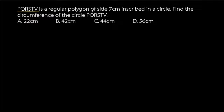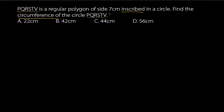PQRSTV is a regular polygon of side 7 cm inscribed in a circle. We are told to find the circumference of the circle. From the problem statement, PQRSTV is a regular polygon inscribed in a circle.